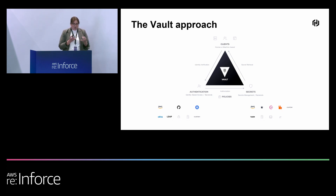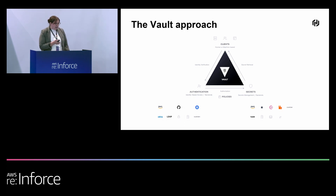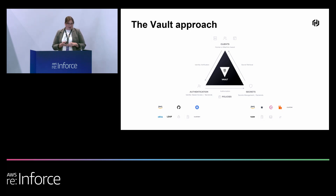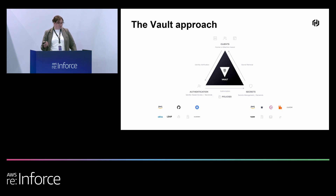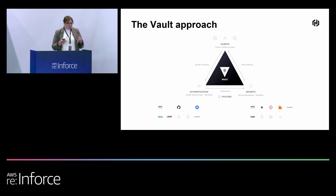With dynamic secrets, you don't have to think about who controls a secret, how long it's supposed to live, or how to rotate it — and that approach doesn't scale. That's a critical part of zero trust security. Lastly is data encryption — keeping your application data secure across your environments so that in the unfortunate event of a breach, you still ensure that your data is protected.